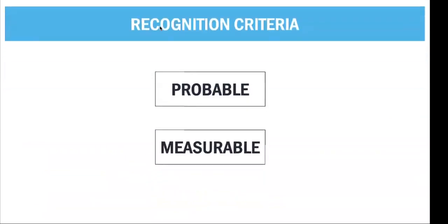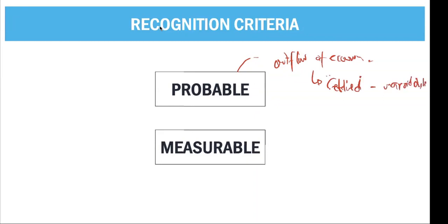So what is the recognition criteria for a liability? We recognize a liability if it is probable and measurable. A liability is considered probable if there is a probable outflow of economic benefits — meaning the liability should be settled and it is unavoidable. It is also measurable, meaning it is capable of being measured by a peso amount. We can recognize it once it is probable, unavoidable, and reliably measurable.